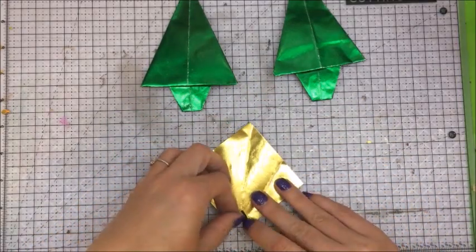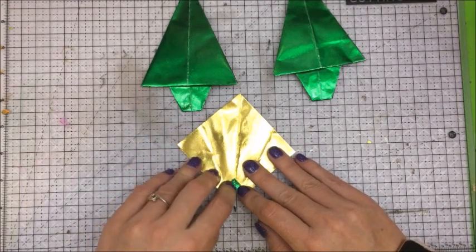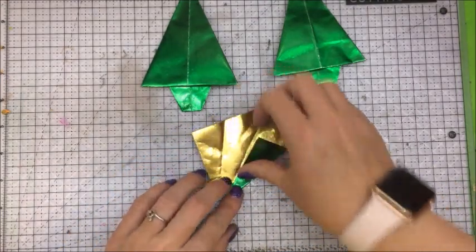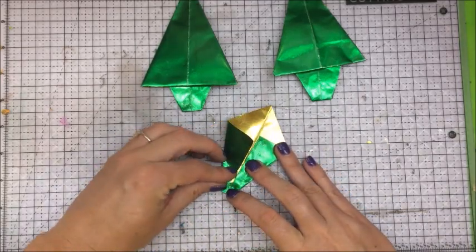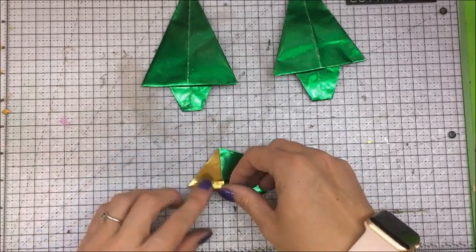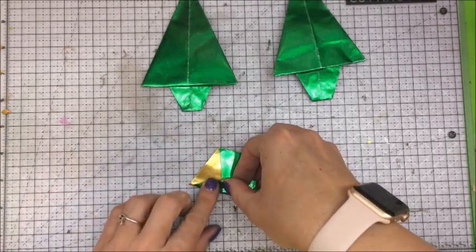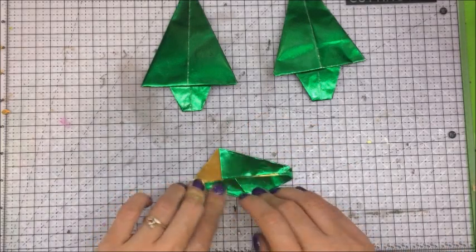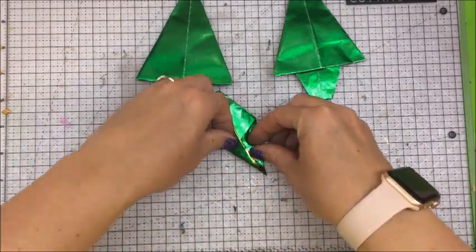Fold this one, open that up, fold our top down just the tip a little bit, fold this all back over again, back over one more time. We're going to pull this up to the center to create the top of our tree. This one to the center to the top of our tree.